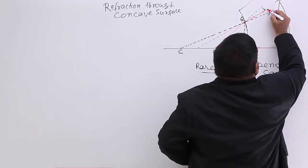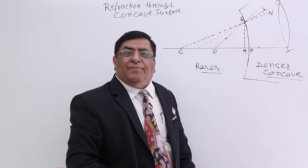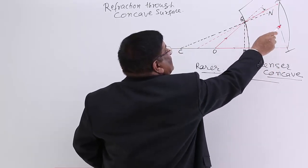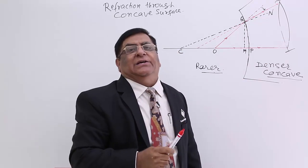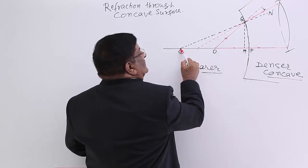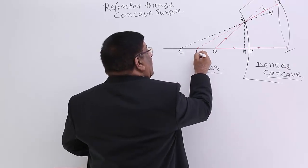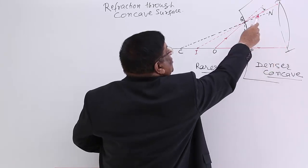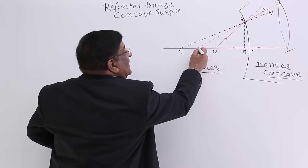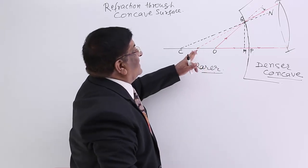One ray and the other ray are both entering our eye. Where do we see the image? These two directions do not actually intersect, so they do not form a real image. But if both are drawn backward, they appear to come from a common point. What we perceive is that both these rays are coming from this point, so the image is seen here. This is how image formation is decided.